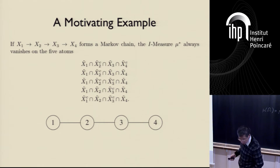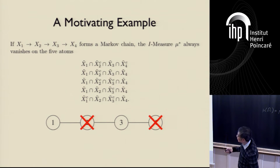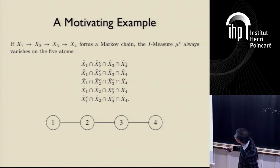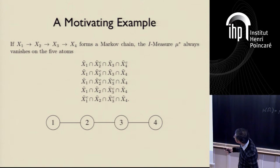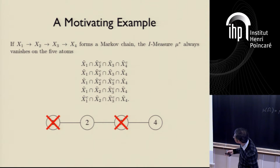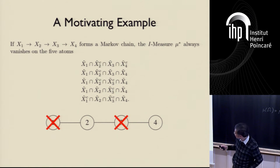The first atom: you take a complement on two and four — that corresponds to crossing those out. The second atom: you take a complement on two, so you cross that out. For the third atom, you complement two and three, so you cross out these two. For the fourth atom, you take a complement of three. And for the fifth atom, you take a complement of one and three. Do you see the pattern? It turns out that, at least for this example, the vanishing atoms are exactly those such that by removing the corresponding complemented nodes, the remaining graph becomes disconnected. We are going to build on this theme.